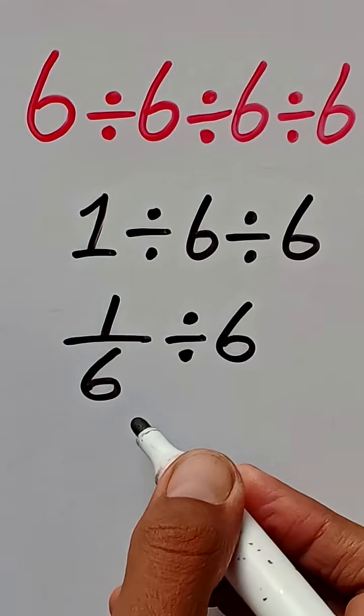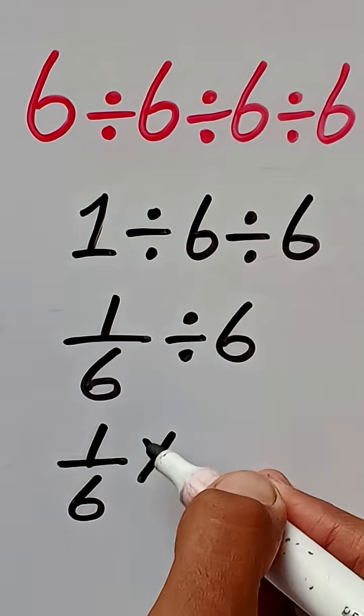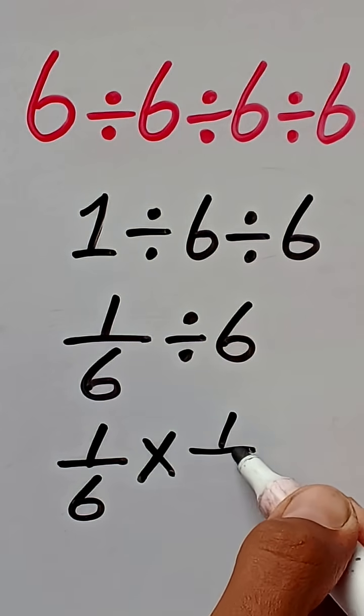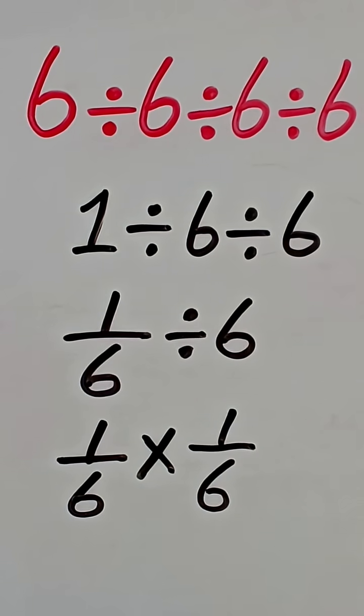To solve this part, we follow the rule of KCF, which says that whenever we change division to multiplication, the numerator and denominator are flipped.